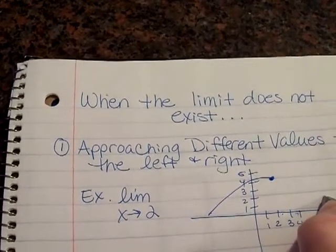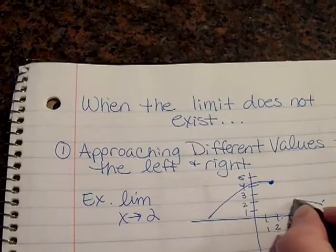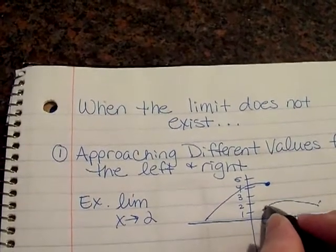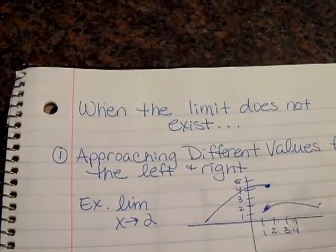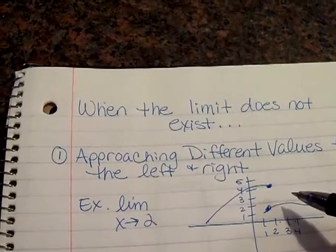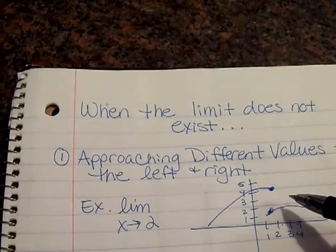And from the right, we have a graph that looks like this. We're approaching y equals 1. This would be a case where the limit does not exist because there's a gap in the graph. It is not continuous.